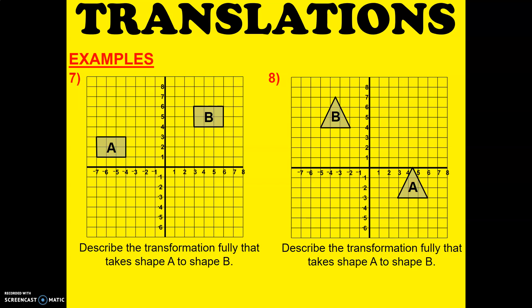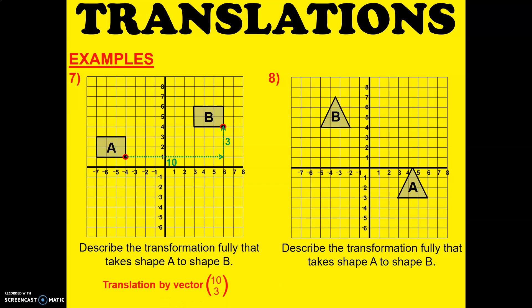Let's try the last two examples. Describe the transformation fully that takes shape A to shape B. How do we do that? Draw a point — that point to that point. That's 10 to the right and 3 up. So that's a translation by vector 10, 3.